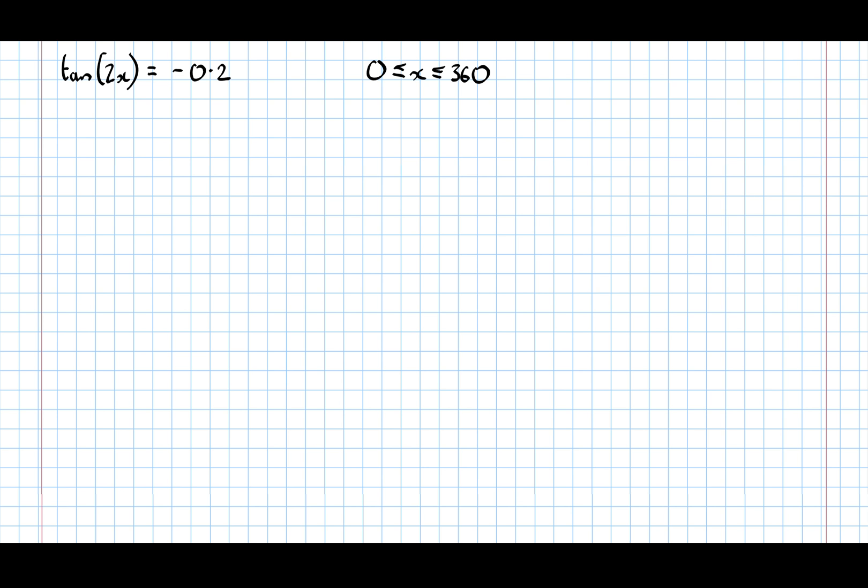What's slightly different about this is we normally expect to say tan of x equals minus 0.2. It's just a slightly more complicated expression, but it says actually tan of 2x.